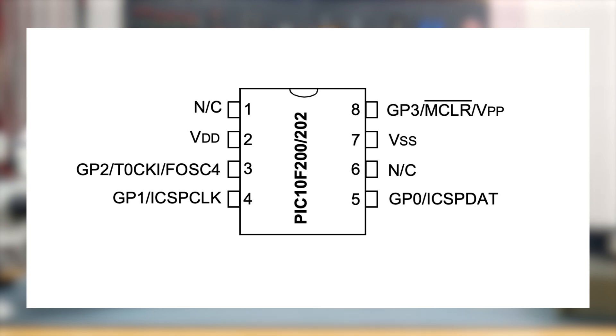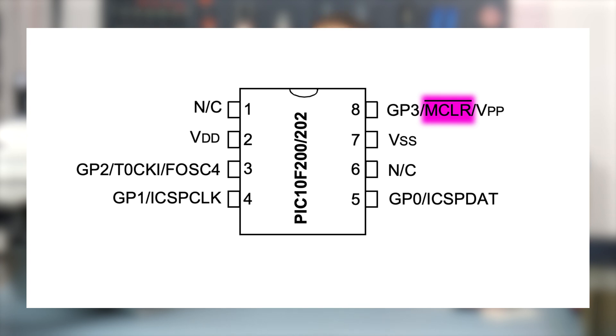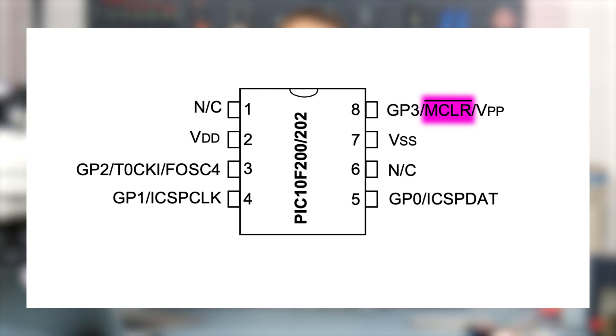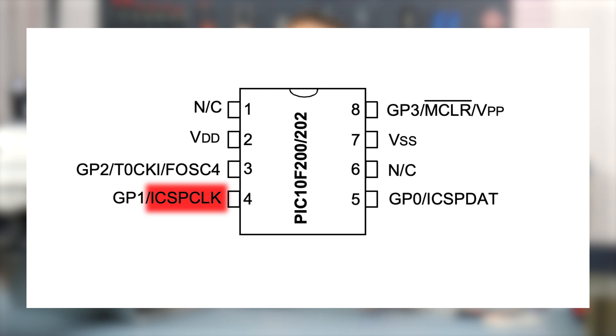There's GP0 through GP2, which are the input/output pins, and then GP3, which is the input-only pin. Then there's MCLR with a bar over it, which means it's active low — to clear it, you pull it down rather than high. There's also the ICSP in-circuit serial programming clock and the ICSP data lines. Those are what you connect to your programmer so it can control the microcontroller and send in the program.